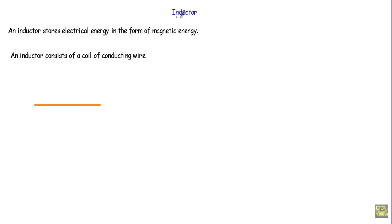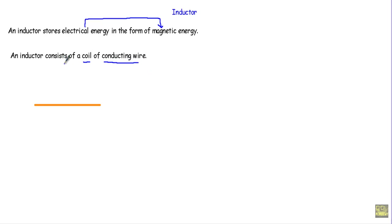In this video I will talk about inductors or coils and their construction. An inductor is a basic electrical element that stores electrical energy in the form of magnetic energy. In other words, an inductor consists of a coil of conducting wire. If we have a simple conducting wire and make a coil from it, that will be our inductor. For example, a copper wire is a conducting material, so it makes a good conducting wire for this purpose.